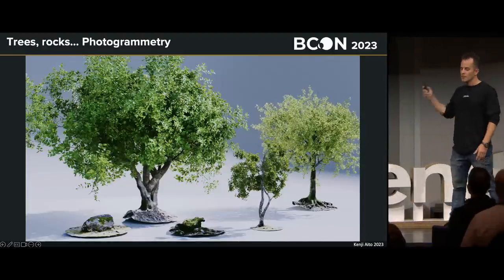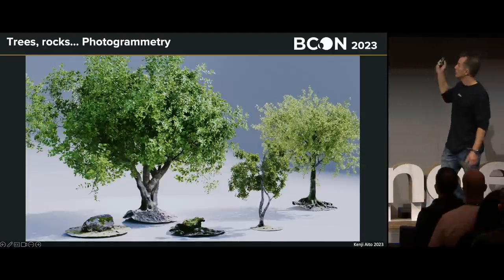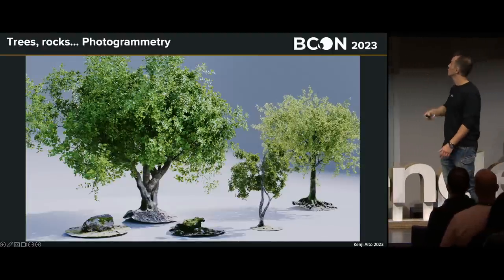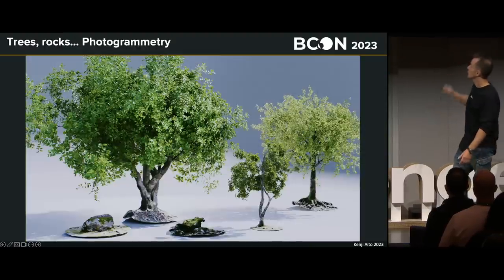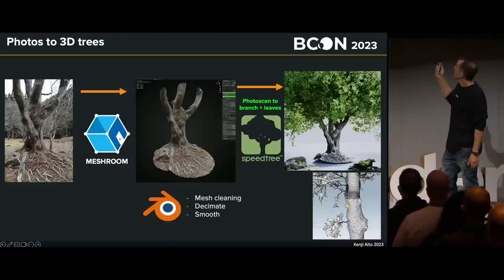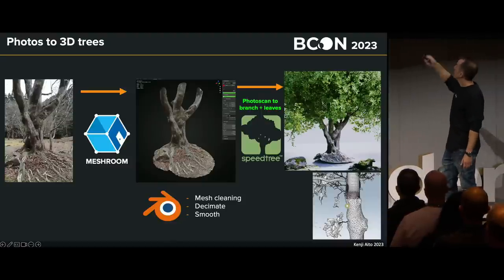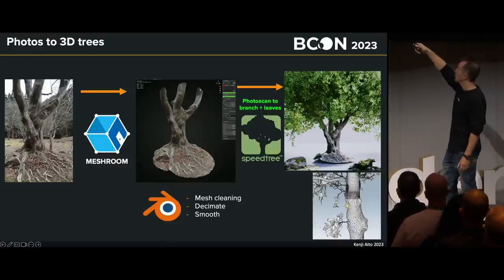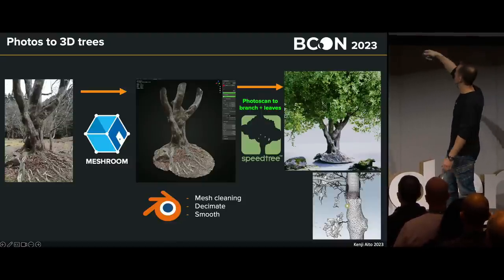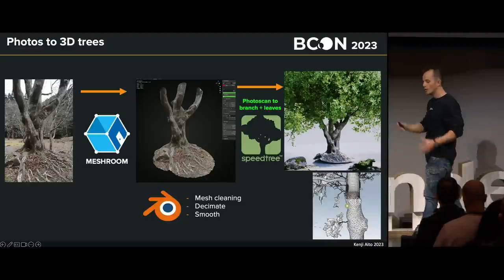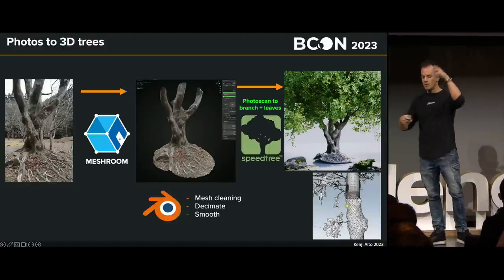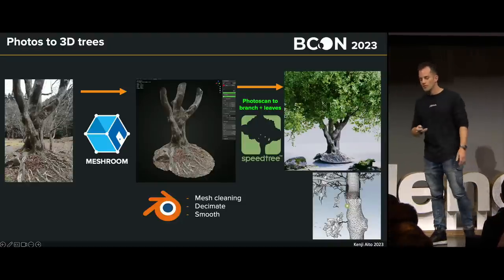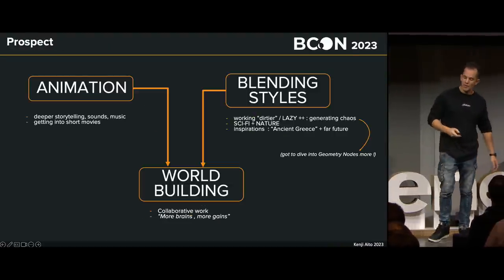Quickly on photogrammetry: the trees are stuff I did myself — it's really important. The pipeline is: photogrammetry from my own photos, cleaning in Blender, and then SpeedTree for generating all the node-based branches, twigs, and leaves.